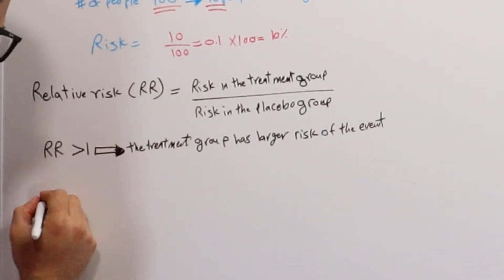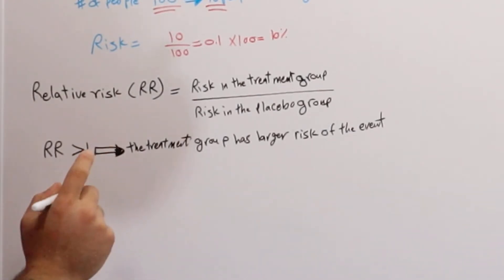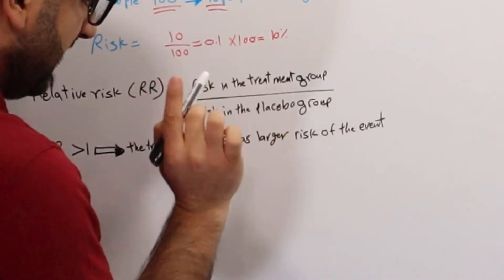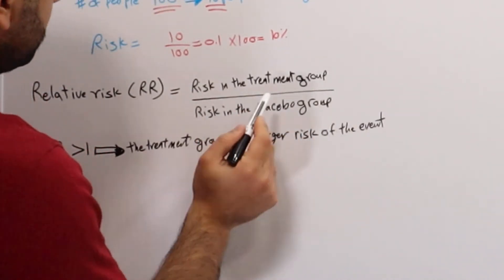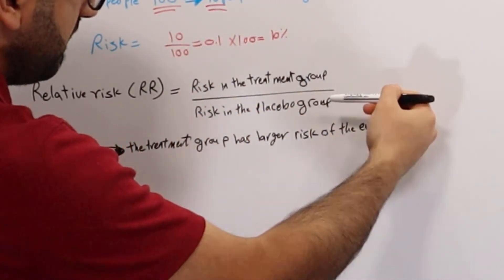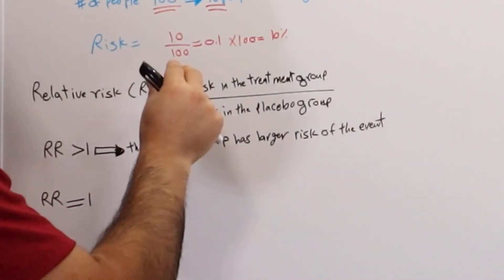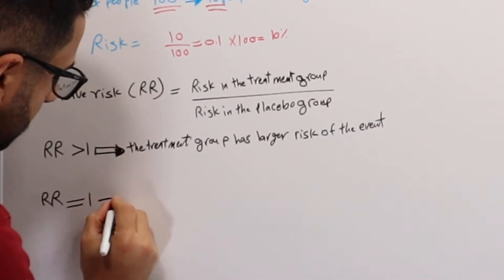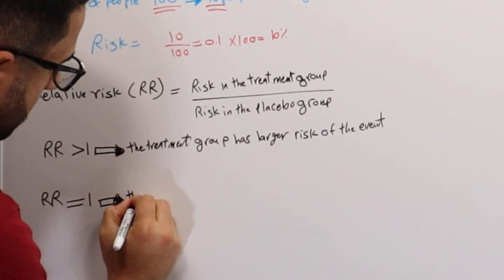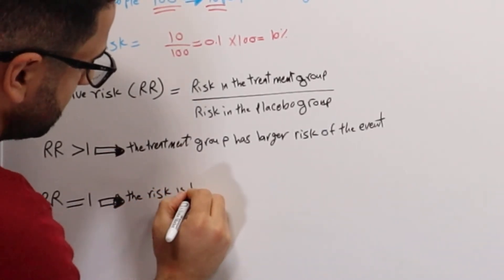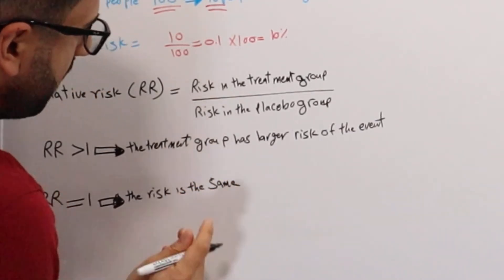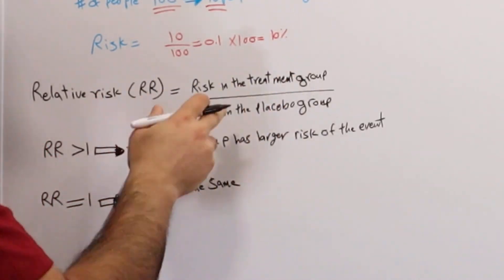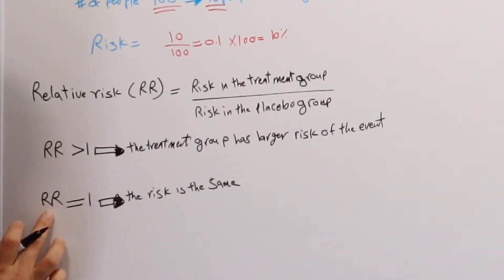Another case would be if the relative risk is equal to one. This means that the number of people in the treatment group — the medication the company is developing — is equal to the number of people in the placebo group who had the event, which is cough. If you have the same number on top as on the bottom, both groups had the same risk of causing cough. Therefore, we can conclude that the risk is the same — there is no difference between the two groups.